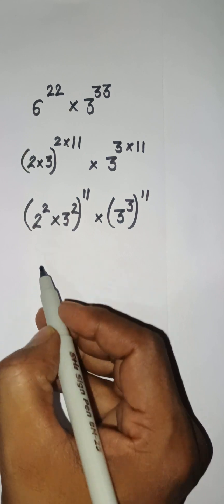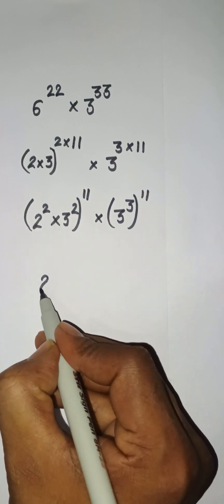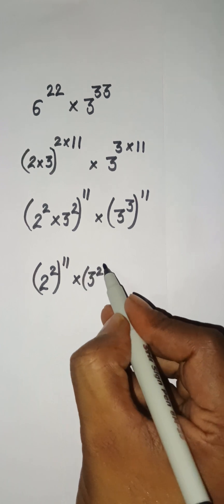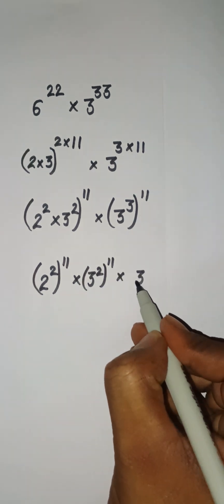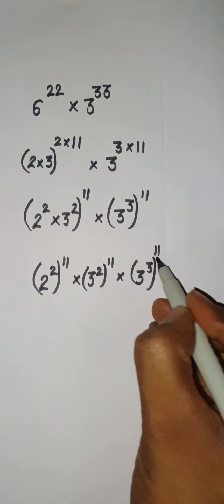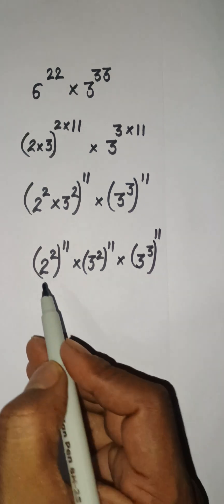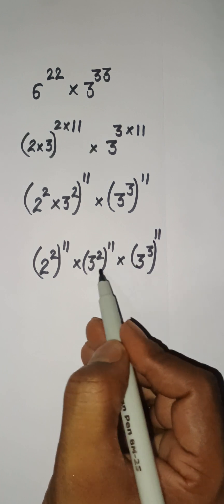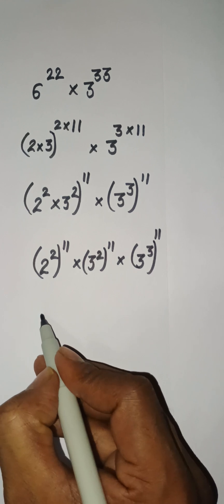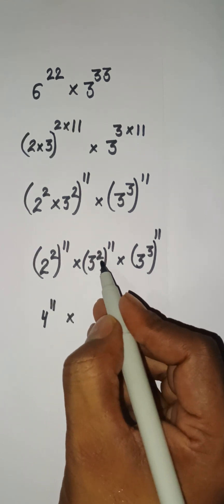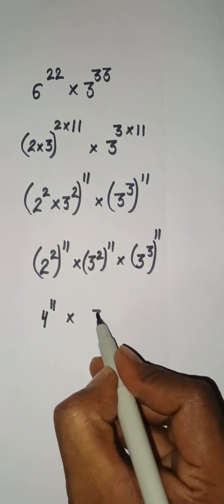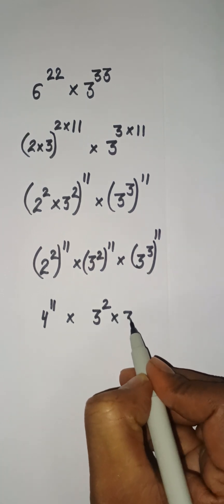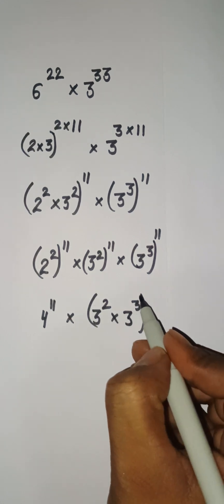Now I can put this together: 2 to the power 2 having power 11, and 3 to the power 2 having power 11, and 3 to the power 3 having power 11. You are seeing that we have 2 here and we have 3 here and here we have 3. So first of all, we will combine these 3s. 2 to the power 2 can be written as 4 to the power 11, and here 3 to the power 2 multiplied by 3 to the power 3 — both are having common power 11.